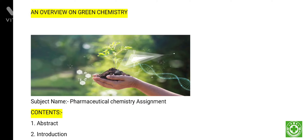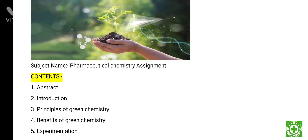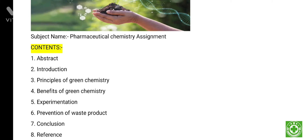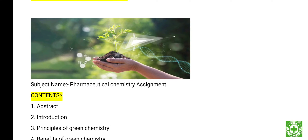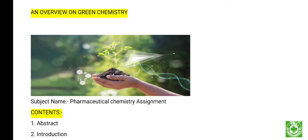In this video, the contents are: number one, abstract; number two, introduction; number three, principles of green chemistry — there are 12 principles; number four, benefits of green chemistry; number five, experimentation with equations; prevention of waste products; conclusion; and lastly, the reference source of this assignment. Please keep watching the full video from first to last — hope it's very helpful for you on your work project.